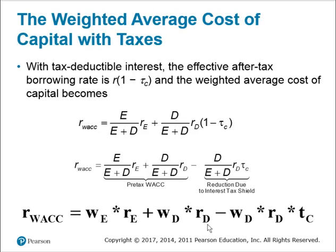Now we need to incorporate this into our weighted average cost of capital. The WACC formula, multiplied by one minus T_C, can be expanded to show the pre-tax weighted average cost of capital minus the reduction due to the interest tax shield. The weighted average cost of capital is expected to decrease because of the present value of the tax shield.